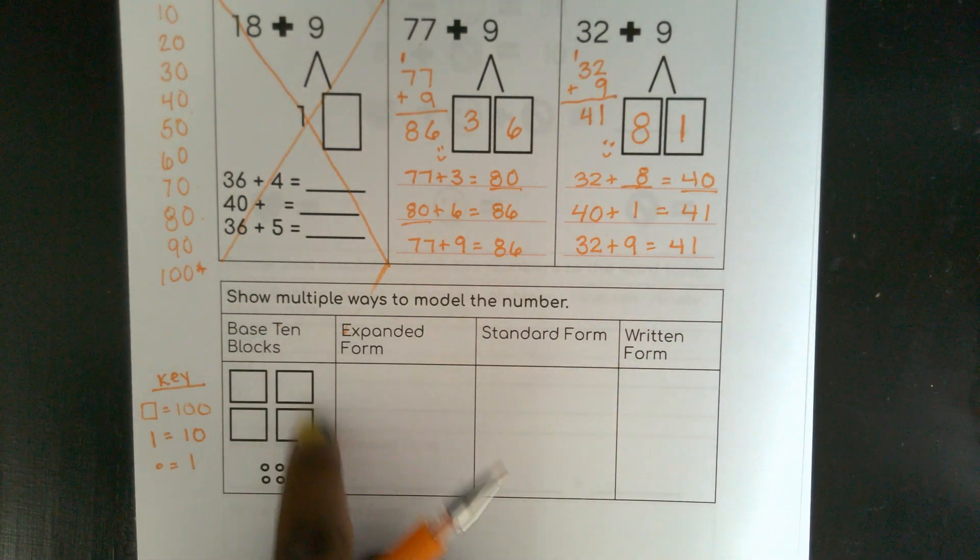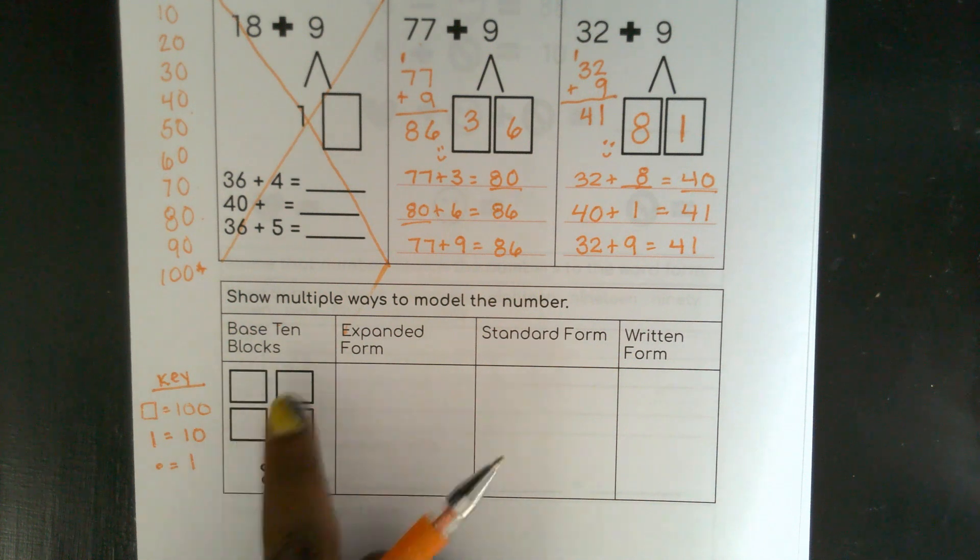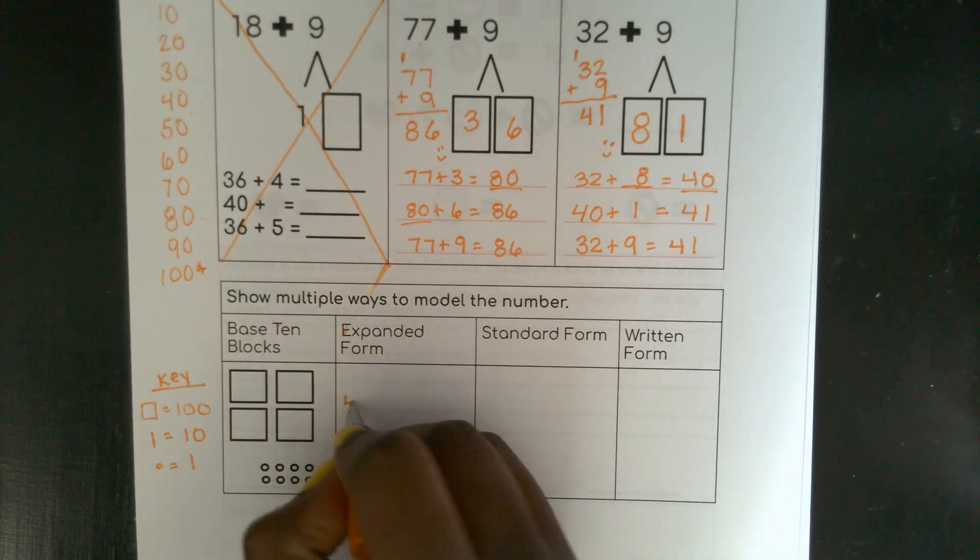So 100. How many hundreds do I have? 100, 200, 300, 400. I have 400.